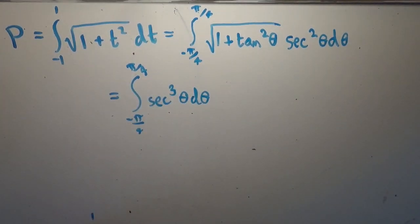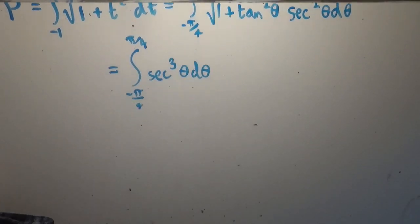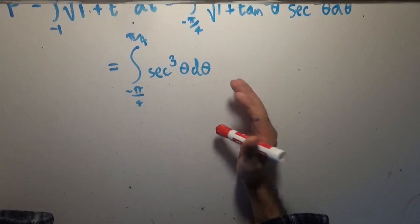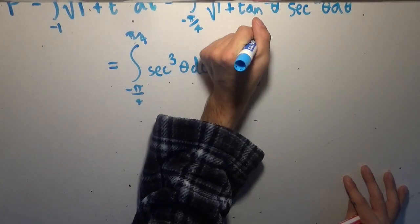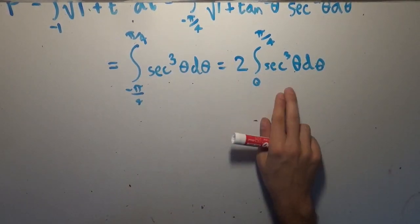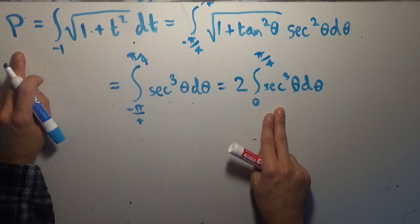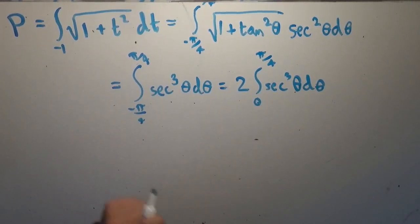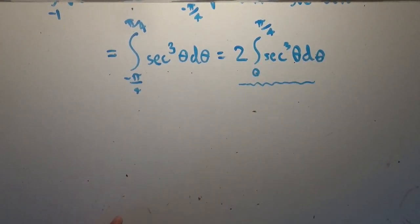So we have to solve the integral of secant cubed to find the universal parabolic constant. Since secant is an even function, integer powers of it are also even, so this equals 2 times the integral from 0 to pi over 4 of secant cubed theta d theta. This is the value of P we're solving for — it equals this fixed number — and what we're really asking is: what is the antiderivative of secant cubed?